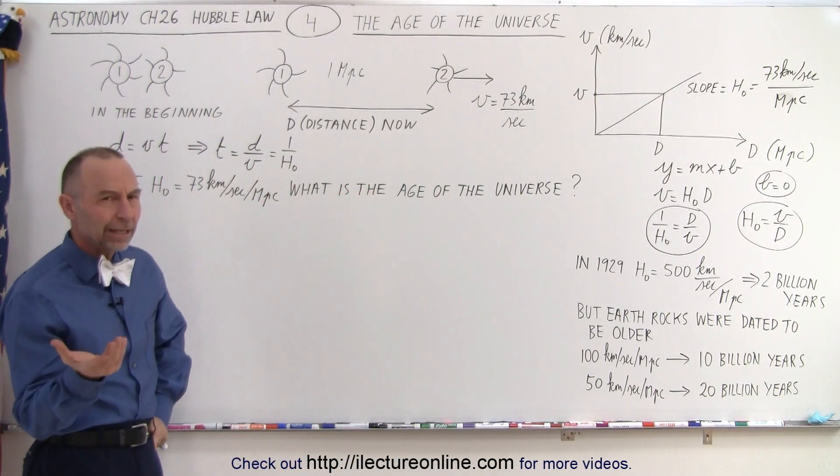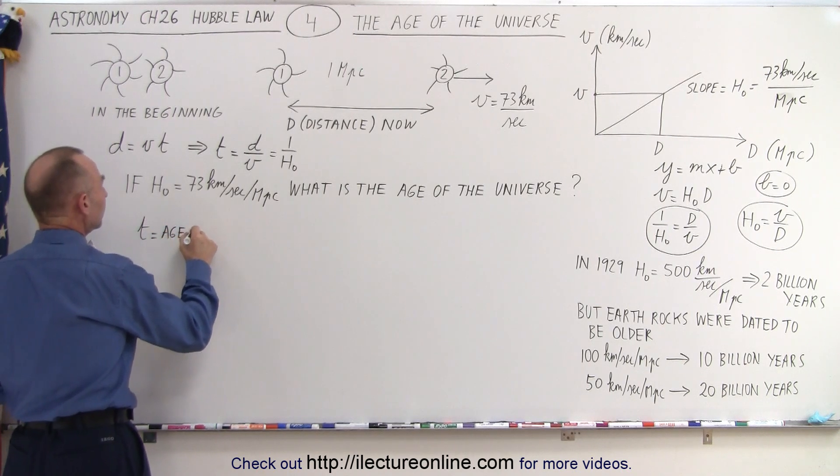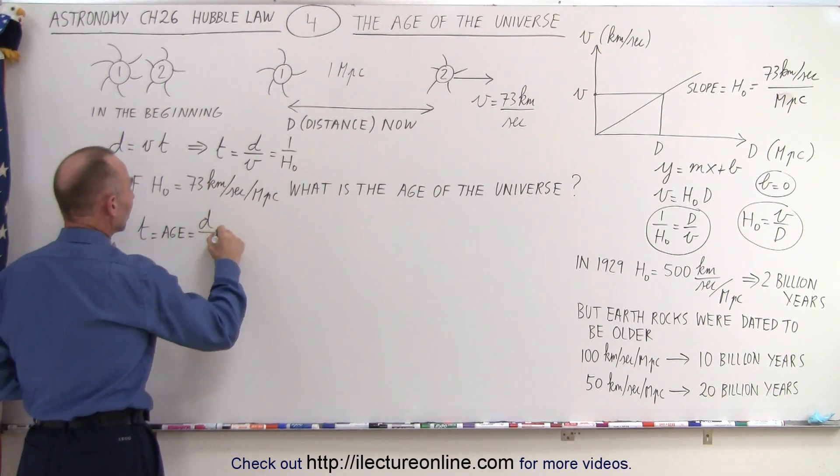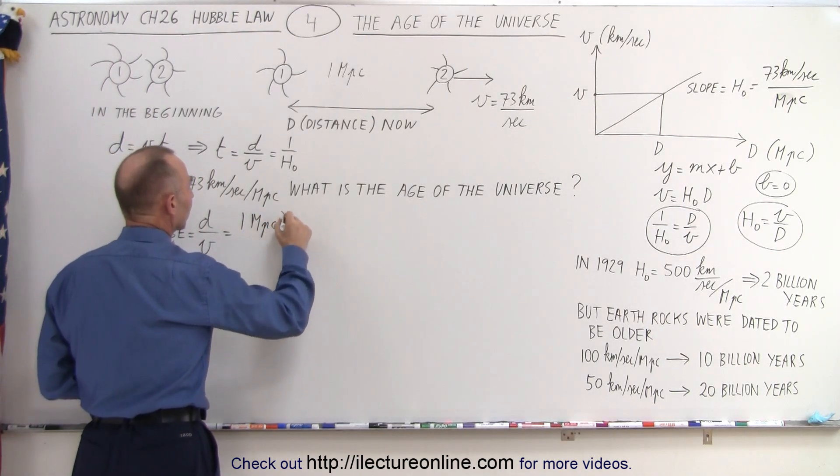How does that relate to the age? Well, you'll see in just a moment. So the age, T, which is equal to the age of the universe, is equal to the distance divided by the velocity. And so we have 1 megaparsec.